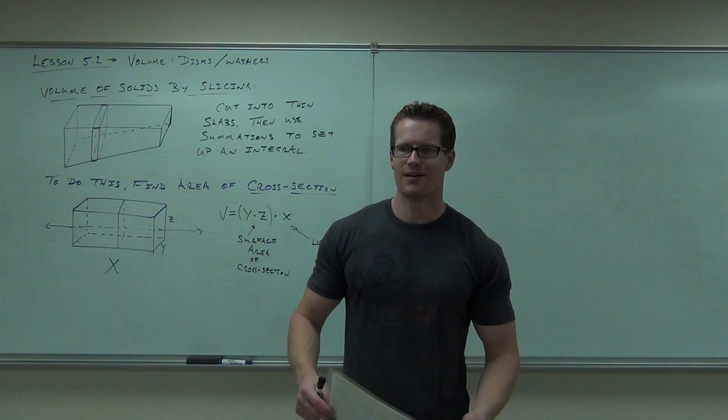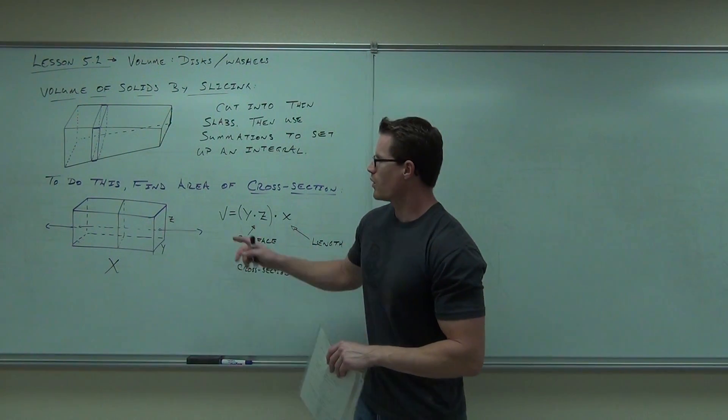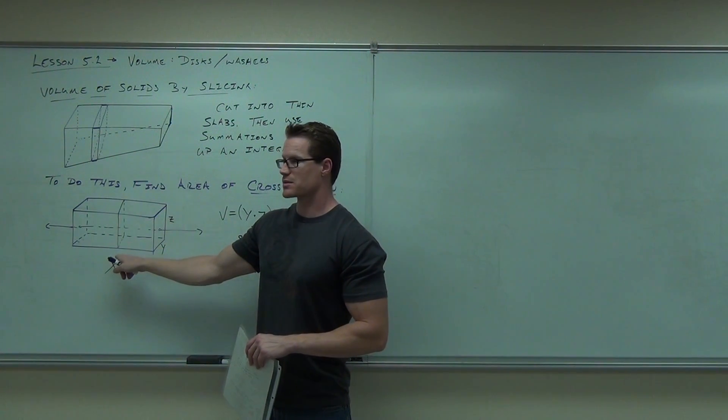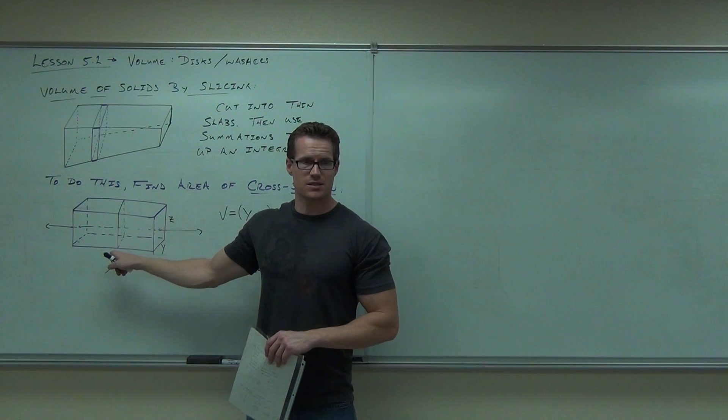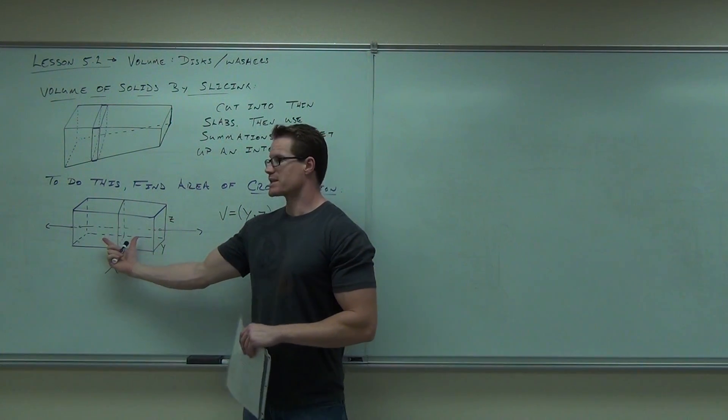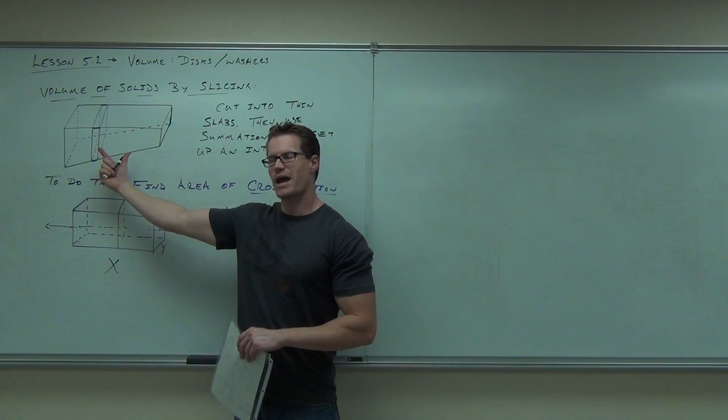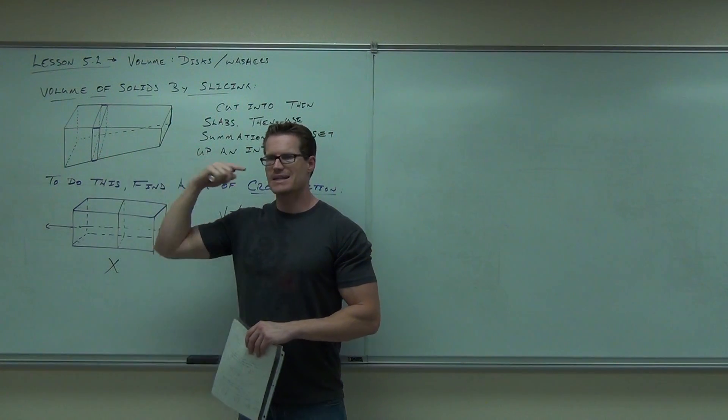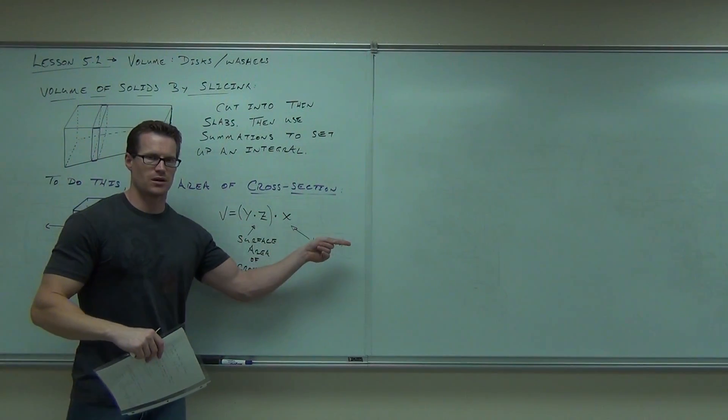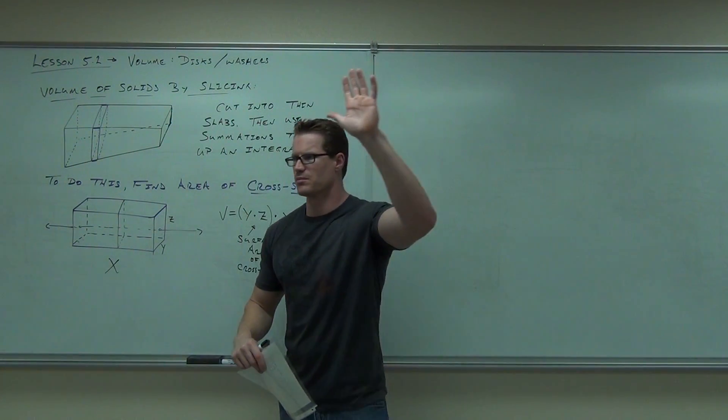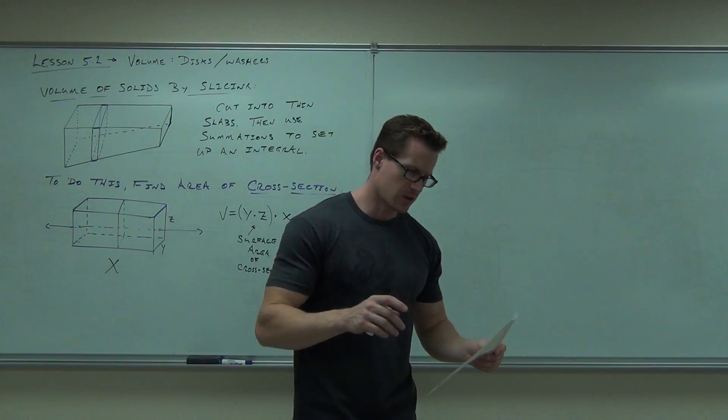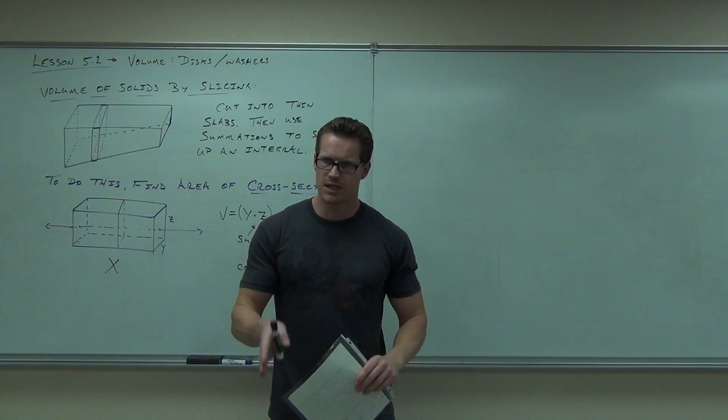Well, now, here's the idea. If that's the case, then what we're basically doing here is making a whole bunch of these things. Making a whole bunch of those things, and then adding up all the volumes. Very similar to making rectangles for areas, we're making rectangular prisms for volumes, and we're going to add them all up.